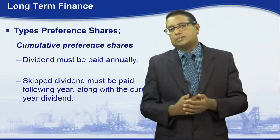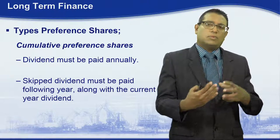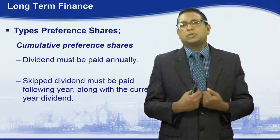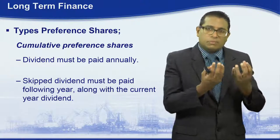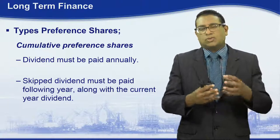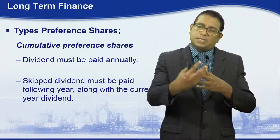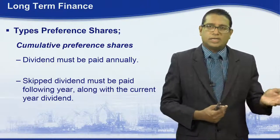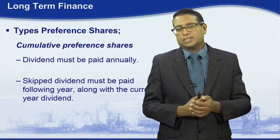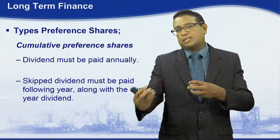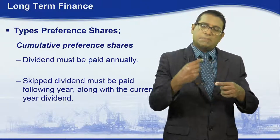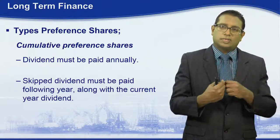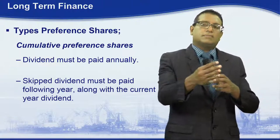Why does a company issue preference shares? The basis of issuing preference shares is to attract some important shareholders. In order to attract them, companies have created several types of preference shares. One good example is the cumulative preference shares. The importance here is that, unlike ordinary shares, there will be a percentage or a fixed amount offered to the preference shareholder — not based on the directors' discretion as with ordinary shares.